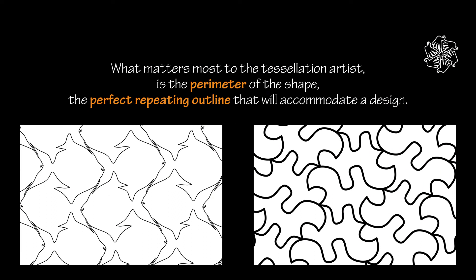Tessellations have recognizable shapes — mostly animal or human shapes, and sometimes objects too. What matters most to the tessellation artist is the perimeter of the shape: the perfect repeating outline that will accommodate a design. We can see fish in the tessellation outline on the left. As for the right side, with a bit of imagination we can see a dog with a huge poofy tail, or maybe a squirrel. The outline of the tile is most important, but also what you make of it on the inside. Imagination is important for both the outline and the details inside.